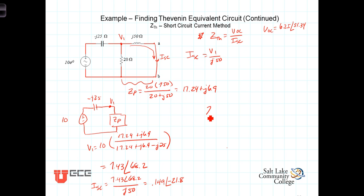So we can find Zp by taking the open circuit voltage of 6.25 angle 51.34 and dividing by the short circuit current of 0.149 angle negative 21.8. And that gives us the same impedance that we found in the previous method of 12.2 plus J40.2 ohms.